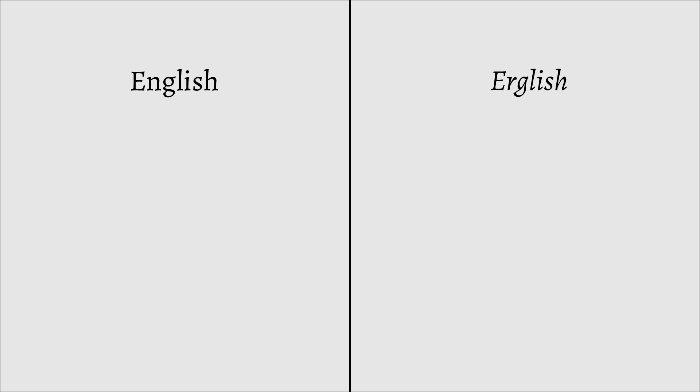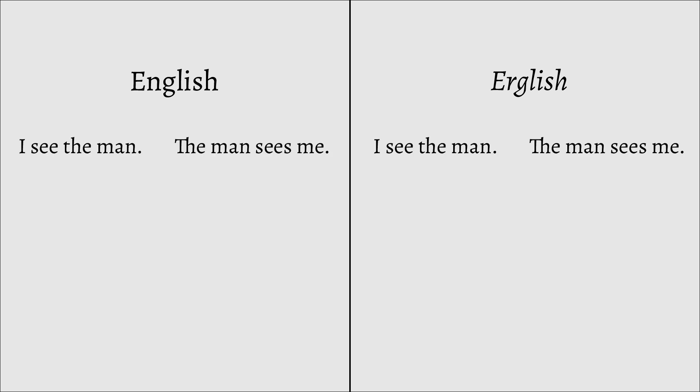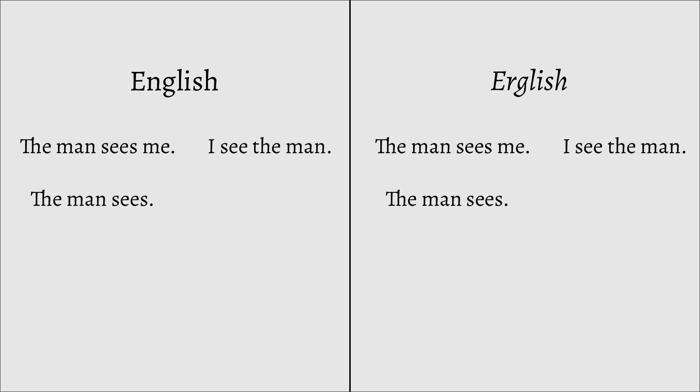In the most basic form of Erglish, transitive sentences will look the same as that of English. The man sees would also be the same between English and Erglish. However, I see in Erglish would be me see. In the nominative-accusative English sentence, the subject pronoun of the intransitive verb — also known as the sole, as it's the sole argument of the verb — takes the same form as the subject pronoun of a transitive sentence, or agent, as it's the one doing the action.